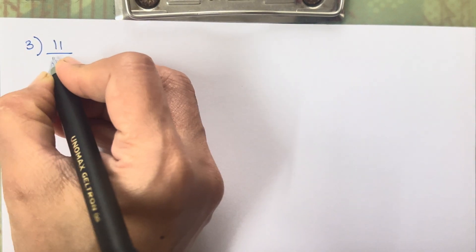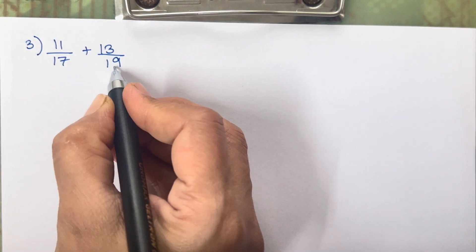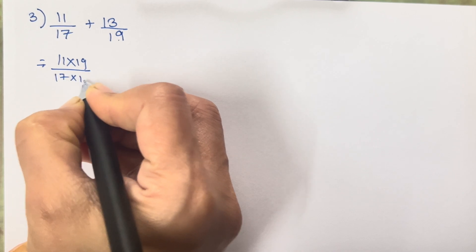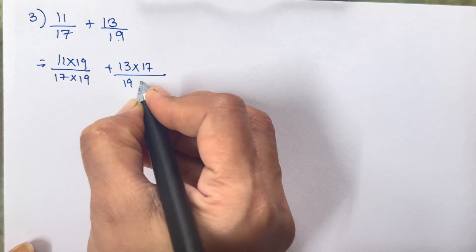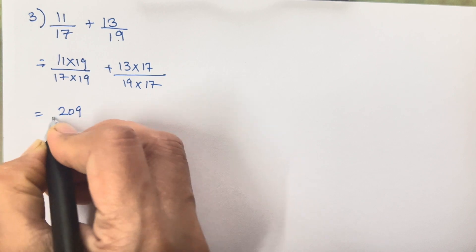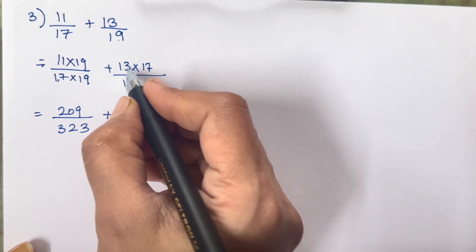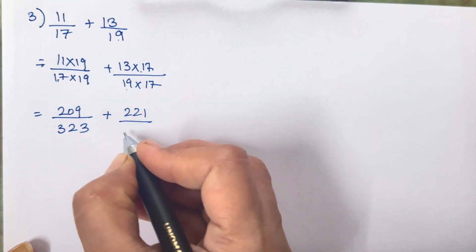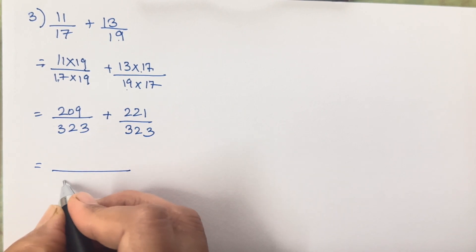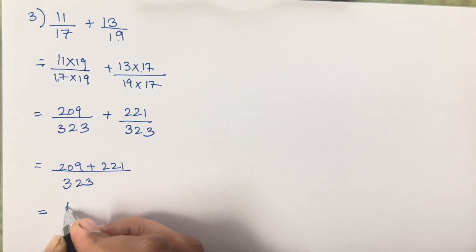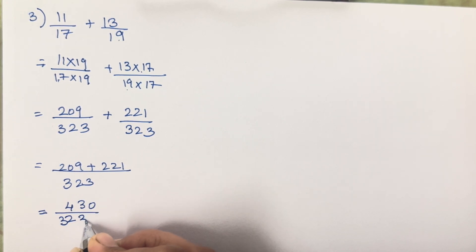That's your answer. Let's move on to the next sum. The third sum is 11 upon 17 plus 13 upon 19. We cross-multiply: 11 × 19 over 17 × 19 plus 13 × 17 over 19 × 17. So 11 × 19 gives 209, and 13 × 17 gives 221. 19 × 17 gives 323. When you add 209 + 221, the denominator is the same, so the answer is 430 upon 323.